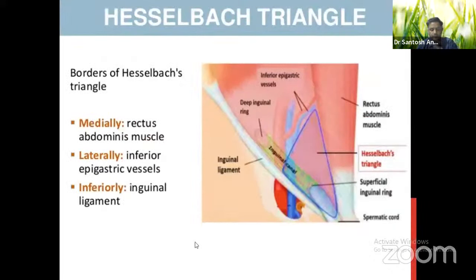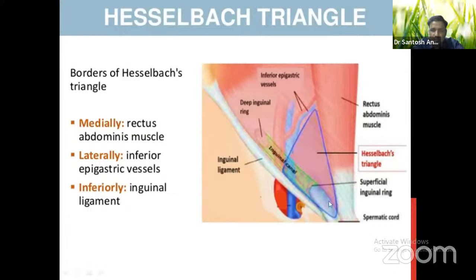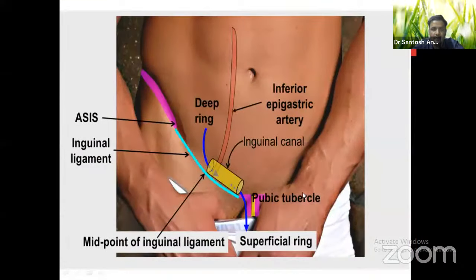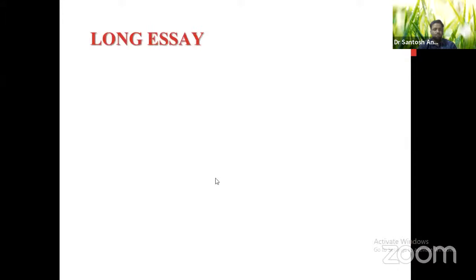The Hesselbach's triangle is the surgical triangle through which direct inguinal hernia occurs. Its boundaries are: medially — the lateral border of rectus abdominis; laterally — the inferior epigastric vessels, which are present medial to the deep inguinal ring; and inferiorly — the inguinal ligament.